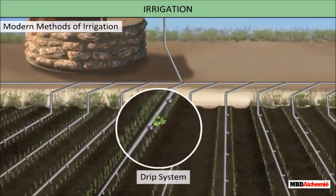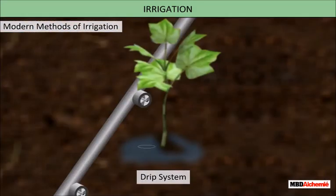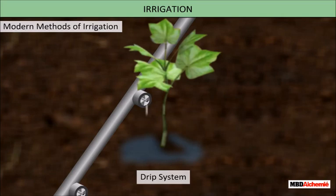In the drip system, water falls drop by drop just at the position of the roots, so it is called the drip system. It is the best technique for watering fruit plants, gardens, and trees. The system provides water to plants drop by drop, so water is not wasted at all. Drip system of irrigation is very effective where water availability is poor.